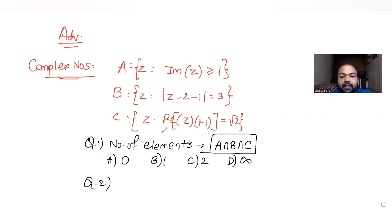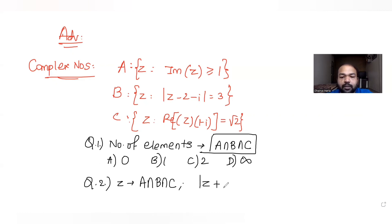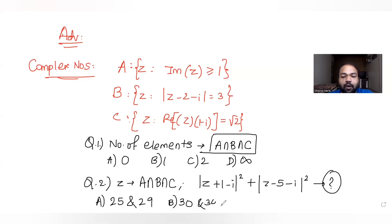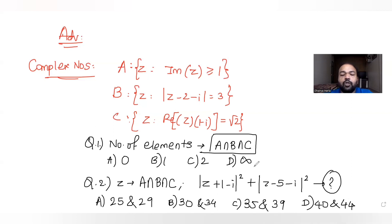The second question says: z is any point in the region A intersection B intersection C, and we are asked to find the value of mod(z plus 1 minus i) squared plus mod(z minus 5 minus i) squared. The options are: between 25 and 29, between 30 and 34, between 35 and 39, or between 15 and 19.